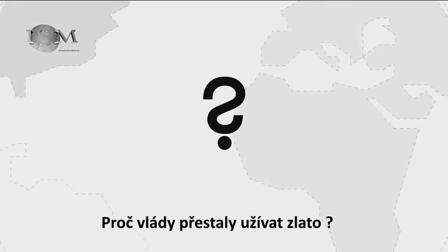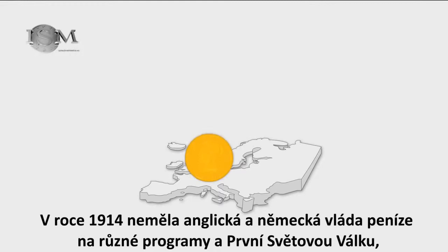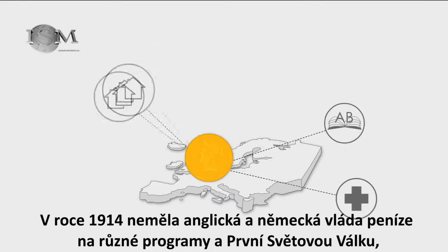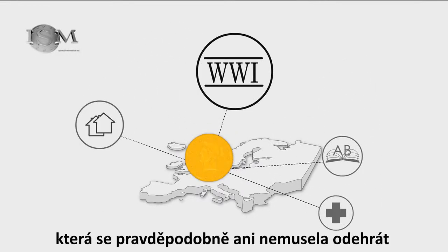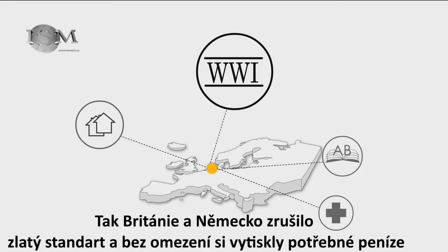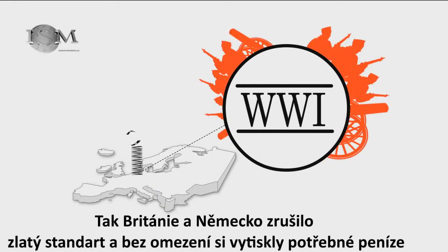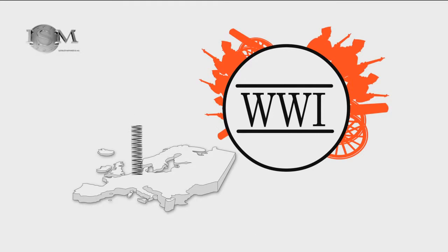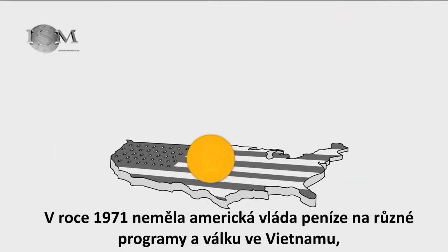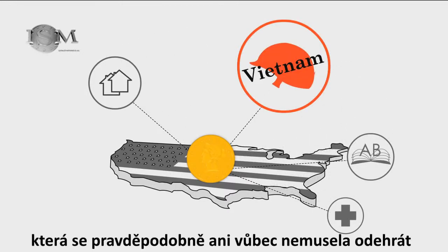Why did governments stop using gold? In 1914, the British and German governments were committed to various spending programs, and World War I — a war that probably needn't have happened — and neither had the money or gold to pay for it. So they took themselves off the gold standard, and free of its restraints, printed the money they needed. In 1971, the American government was committed to various spending programs, and Vietnam — a war that probably needn't have happened.